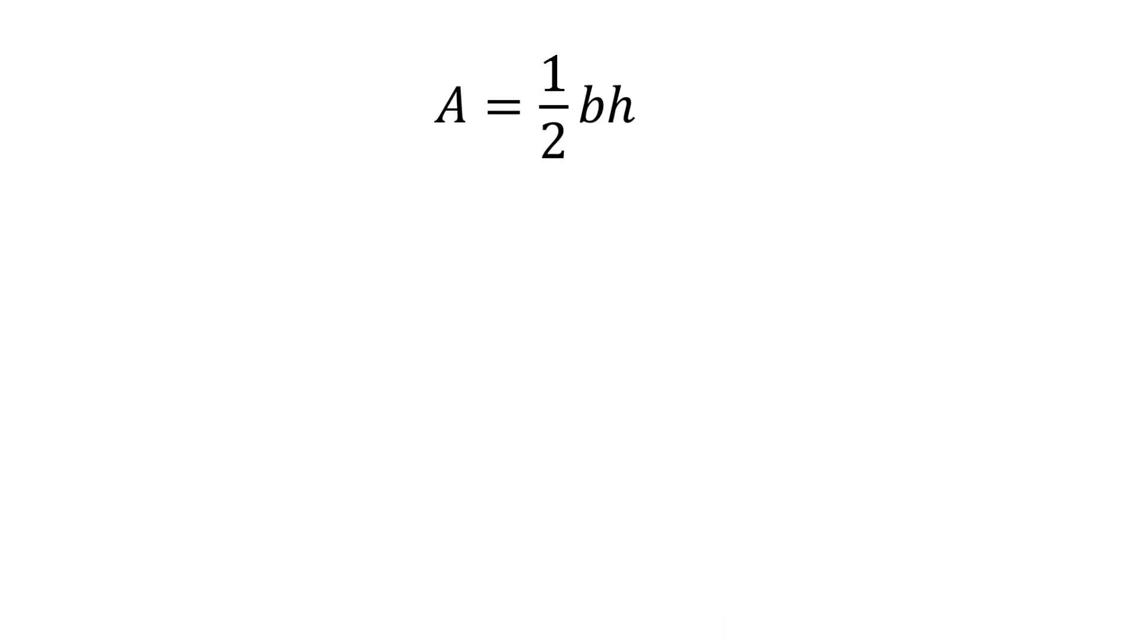The next formula is 1 half times b times h. This is the area of a triangle with the base b and the height h.